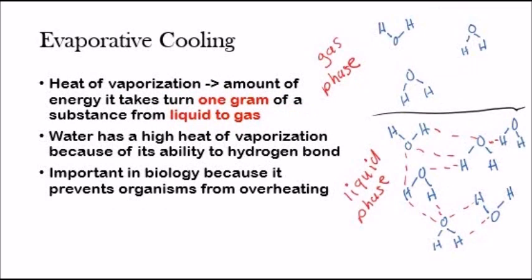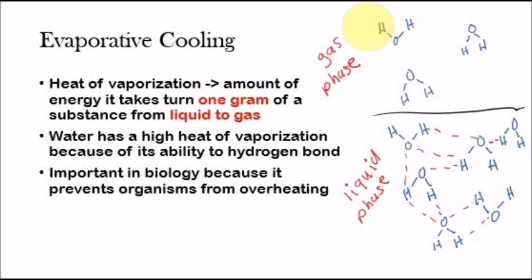Now let's talk about the second thermal property of water, which is evaporative cooling. Heat of vaporization — another definition you need to memorize — is the amount of energy it takes to turn one gram of a substance from liquid to gas. Water has a very high heat of vaporization, again because of its ability to hydrogen bond. In the liquid phase, water has hydrogen bonds, but in the gas phase, intermolecular forces cease to exist. In order for water to go from the liquid phase to the gas phase, all these hydrogen bonds need to be broken, which is why it takes a lot of energy. That's why water has a high heat of vaporization.